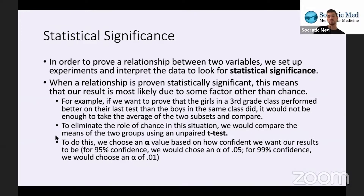When a relationship is proven statistically significant, this means that our result is most likely due to some factor other than chance. For example, if we want to prove that the girls in a third grade class performed better on their last test than the boys in the same class, it would not be enough to just take the average of the two subsets and compare.